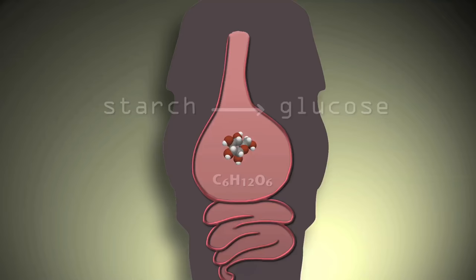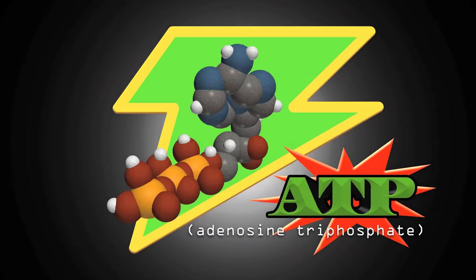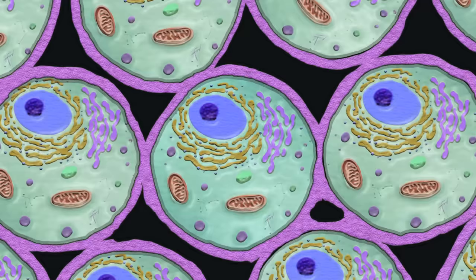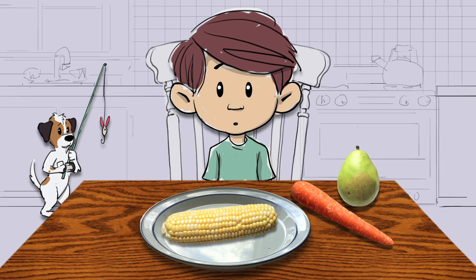Then the mitochondria in our cells, powered by the oxygen we breathe, can turn glucose into pure energy molecules called ATP. ATP powers all work done by each and every one of your cells — things like communication, movement, and transport.